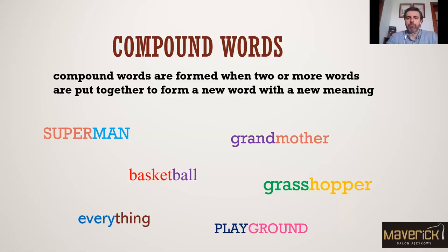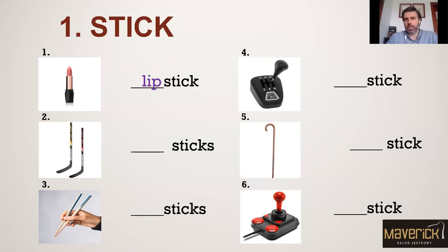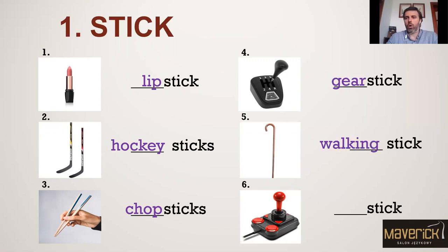You put them together and separate them, and again put together, and then you will have brand new words with brand new meaning. It comes down to actually putting components together, sticking two words together. I'm going to show you five families of words and display how it actually works. So we have the first family: stick. The core component is of course the word 'stick.' Number one: lipstick, hockey stick, chopsticks, gear stick, walking stick.